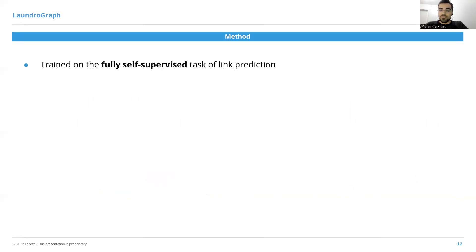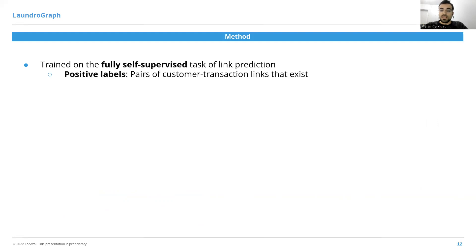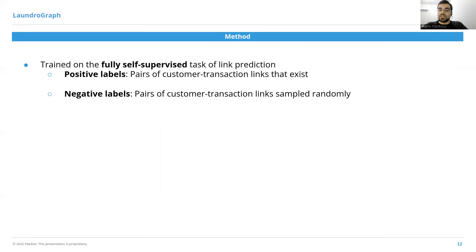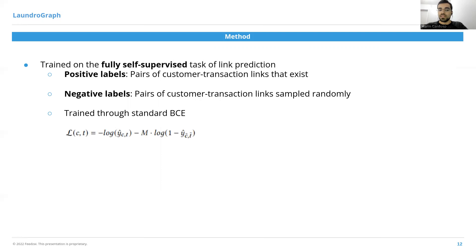Our model is trained on the fully self-supervised task of link prediction. To train, we need positive and negative labels. Positive labels are pairs of customer-transaction links that did in fact exist, and negative labels are pairs sampled through a sampling function such as random uniform sampling. The model is then trained through standard binary cross-entropy.